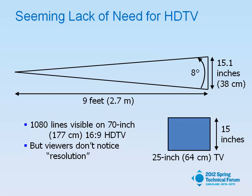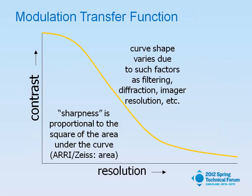A 25-inch 4-to-3 TV set is 15 inches high, and at 9 feet, an 8-degree viewing angle subtends 15 inches. To see all of 1080 lines, you would have to have a 70-inch TV at a 9-foot viewing distance. But viewers don't notice resolution. Have you ever had a viewer come up to you and say, "What spectacular resolution on that TV set?" No — they say, "What a sharp picture." And picture sharpness is a function of both contrast and resolution.